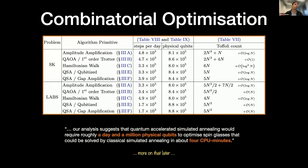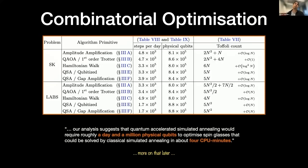The numbers in the middle columns are derived from the expressions in the rightmost column, where I treat all bits of precision as a fixed constant — so there's no indication of scaling in terms of working precision. There's no error tolerance mentioned in the right-hand column, which is a limitation of the study. Our abstract states that quantum-accelerated simulated annealing would require roughly a day on a million physical qubits to optimize spin glasses that can be solved by classical simulated annealing in about four CPU minutes. Most of those 77 pages are actually about the Toffoli count on the far right.